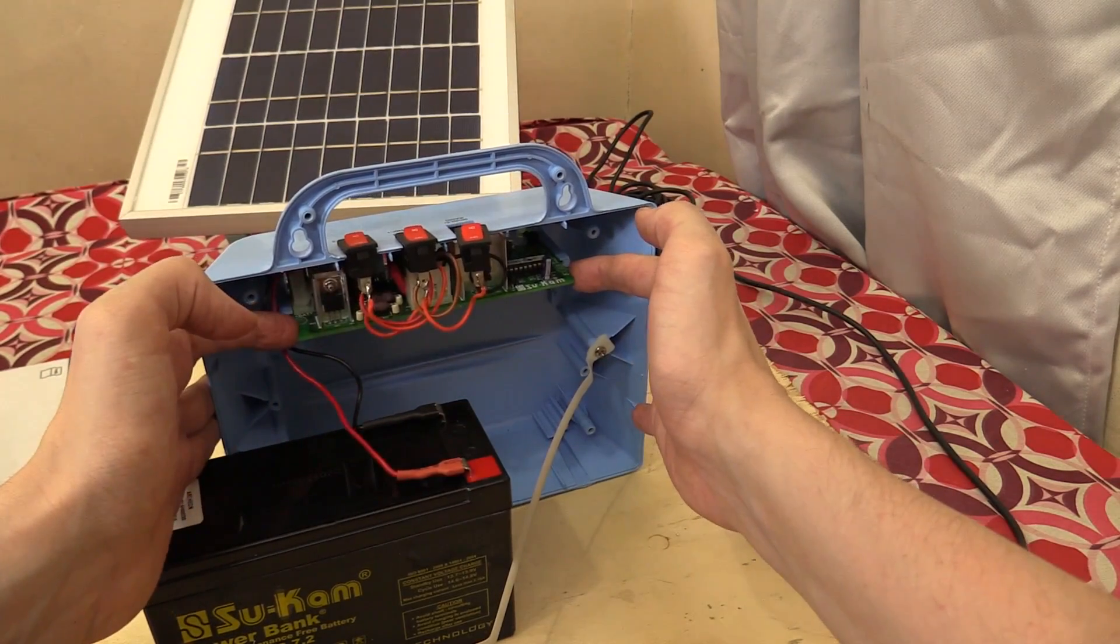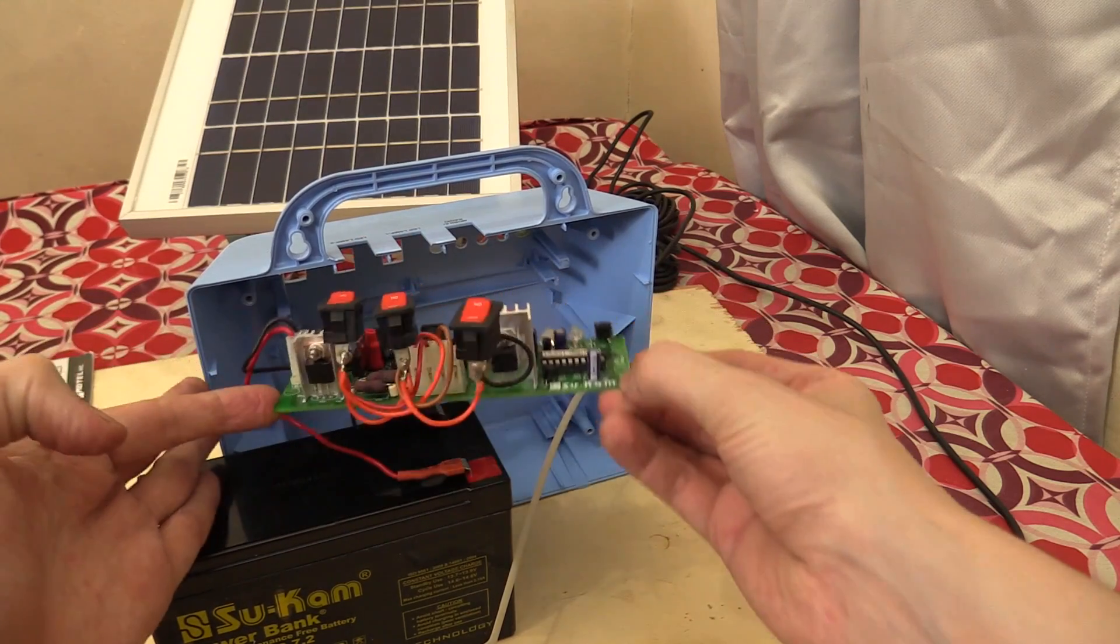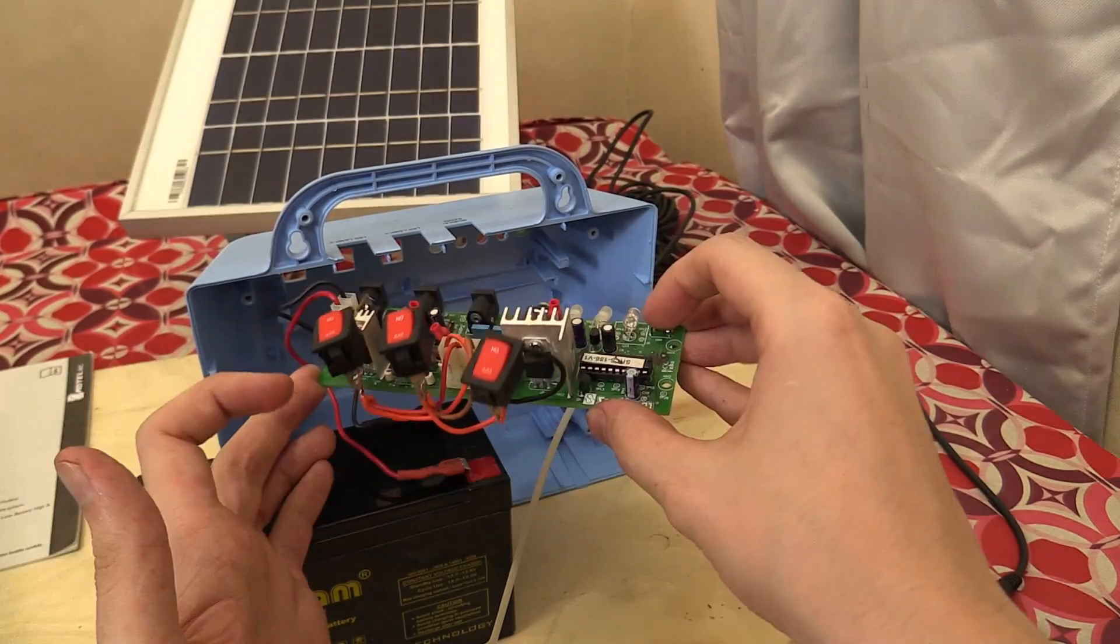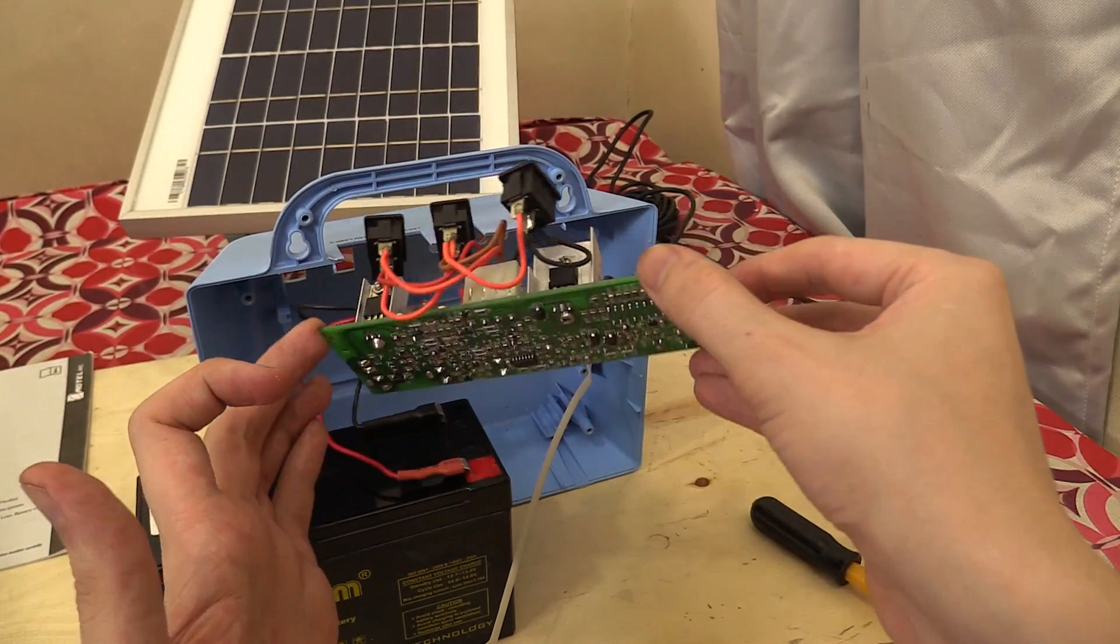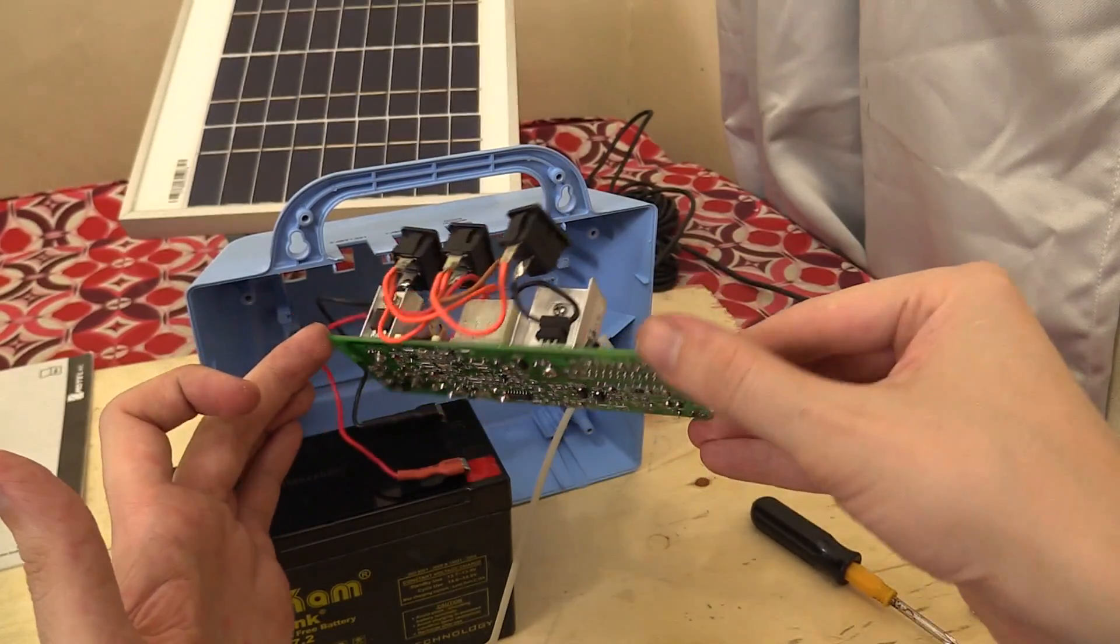And now let's take a look at the board itself. This just slides out. You can see it's all very easy to take apart. So, of course, we've got the switches for turning the lamps on and off and the USB port on and off. And to be honest, I was actually surprised to find so much on here.